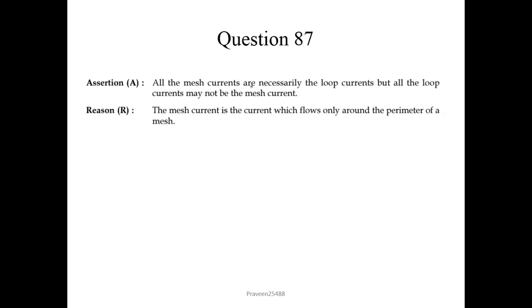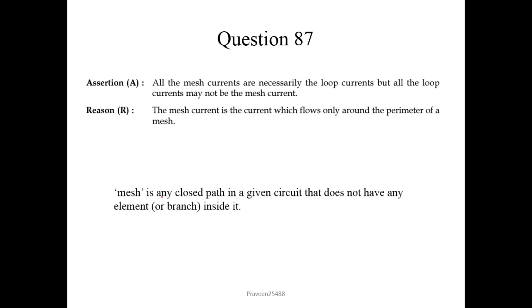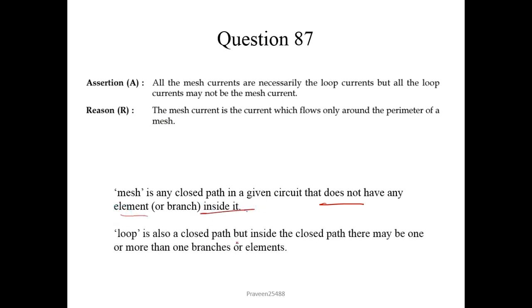Question 87. All mesh currents are necessarily loop currents, but all loop currents may not be mesh currents. A mesh is any closed path in a circuit that does not have any element or branch inside it, while a loop is also a closed path but may have one or more branches inside it. The mesh current is the current which flows only around the perimeter of the mesh — correct statement and the explanation of assertion. So we choose option 1.